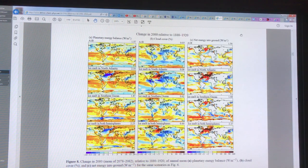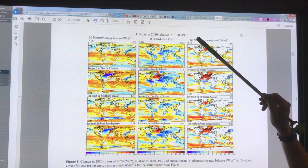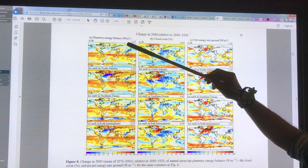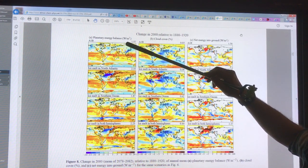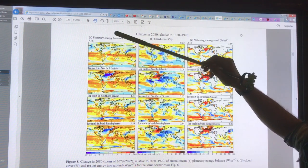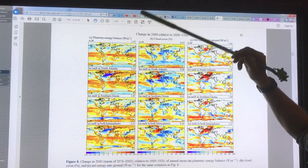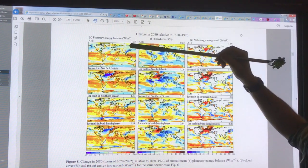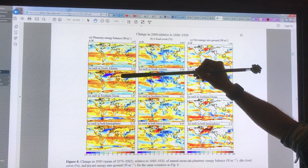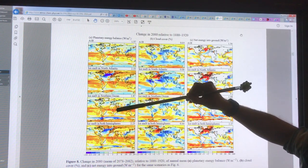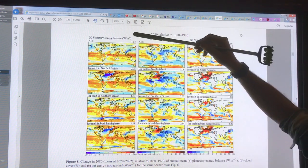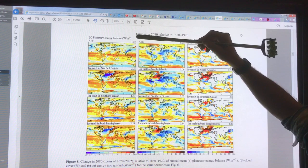These are changes in 2080 relative to the 1880 to 1920 average in terms of the energy balance on the planet under one of the IPCC scenarios. It's similar format to the previous grid of maps. This is ice melt in North Atlantic from Greenland, ice melt from Antarctica, and the combination of both. It shows the energy balance in terms of the forcings in watts per square meter.